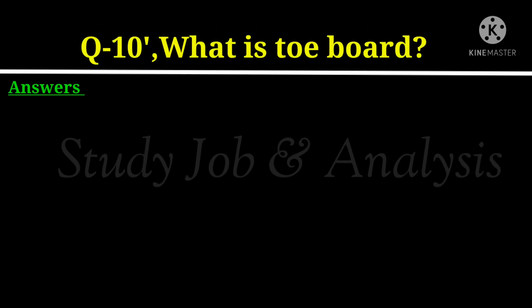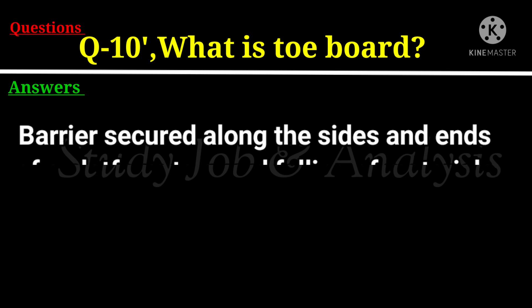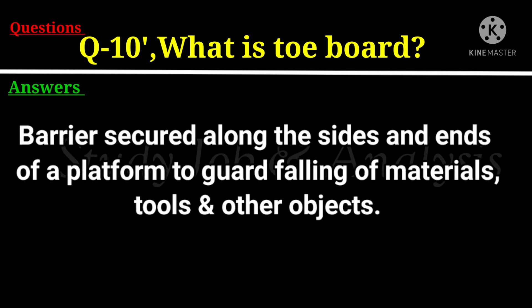Question number 10: What is a toe board? A toe board is a barrier secured along the sides and ends of a platform to guard against falling of materials, tools, and other objects.